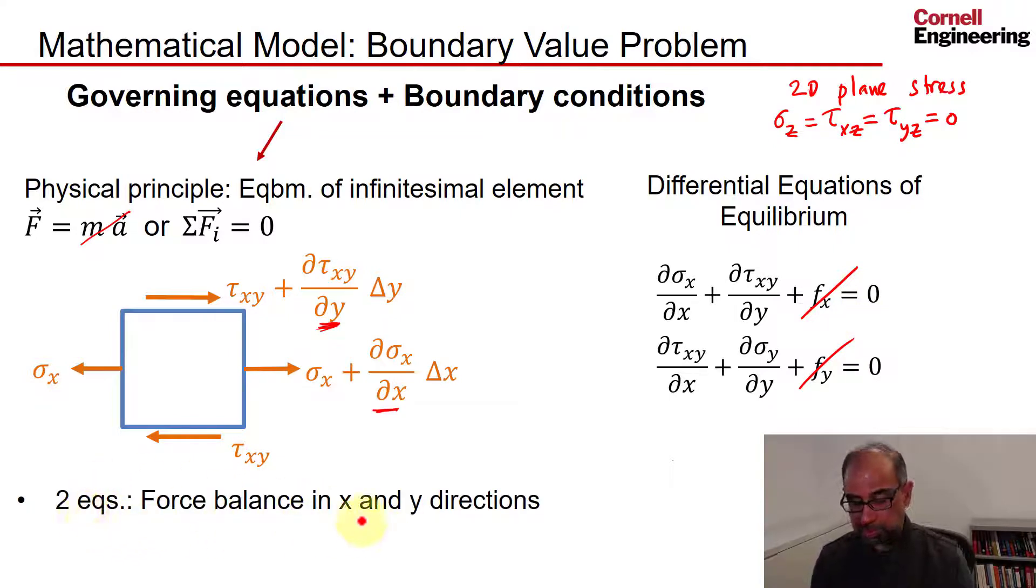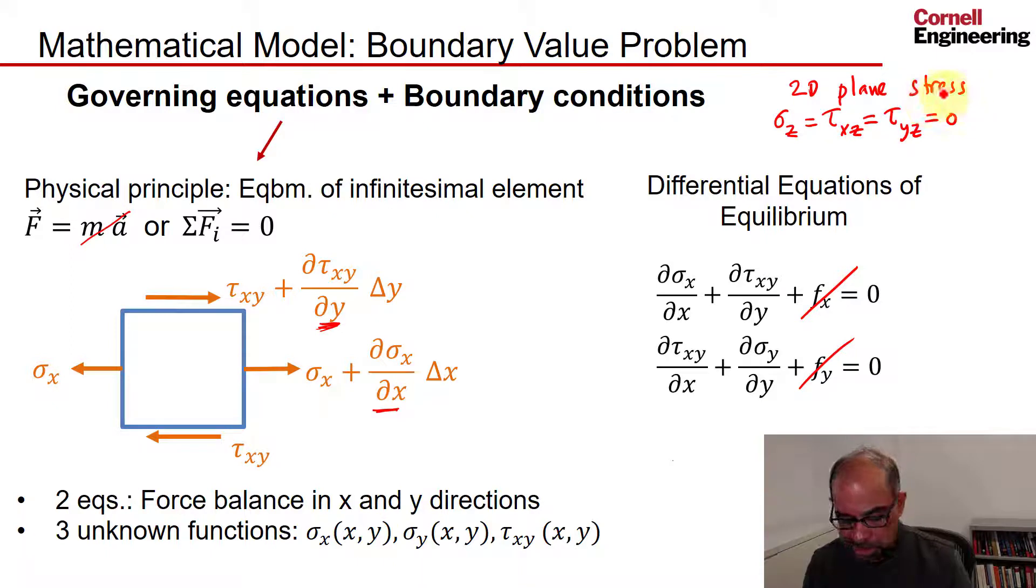So we have two equations from force balance in the x and y directions. We have three unknown functions: sigma x, sigma y, and tau xy, each of which is a function of x and y. There's no dependence on z because we have assumed 2D plane stress. So we need additional equations to close the equation set.